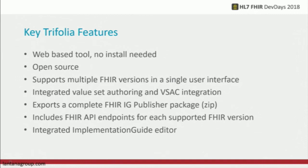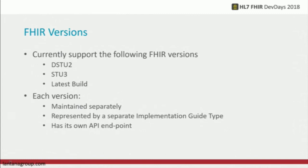Currently we support three versions of FHIR out of the box: DSTU2, STU3, and what is currently the latest build, which will become FHIR R4 when R4 is published. Each version of FHIR does have its own API endpoint. The workflow is described in the help documentation, and there's a tutorial listed as one of the exercises that walks you through how to create a FHIR implementation guide and how to profile FHIR resources. Basically you create an implementation guide based on the FHIR version you're using, add profiles selecting resources like Observation, Condition, or Composition, begin profiling, link it to the implementation guide, and then export the whole thing as a FHIR IG publisher package.